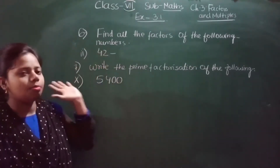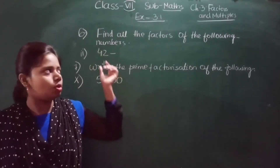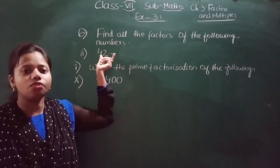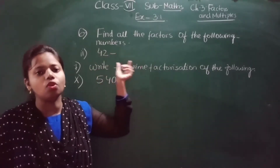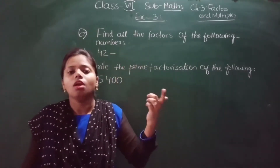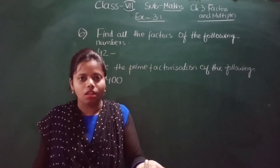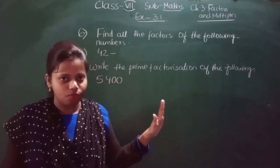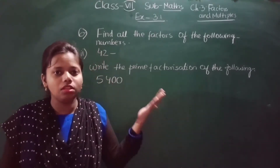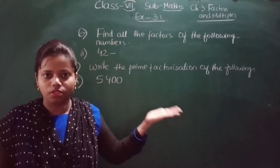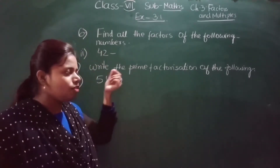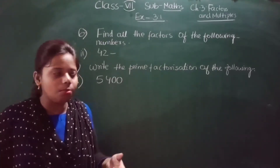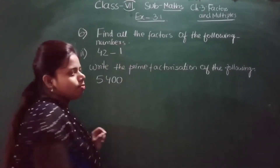Question number 6 is: find all the factors of the following numbers. Here a few numbers are given; I have chosen one number to show you how to do it — you will apply the same method to the other numbers. So the question asks us to write all the factors of 42, meaning in which tables 42 appears.